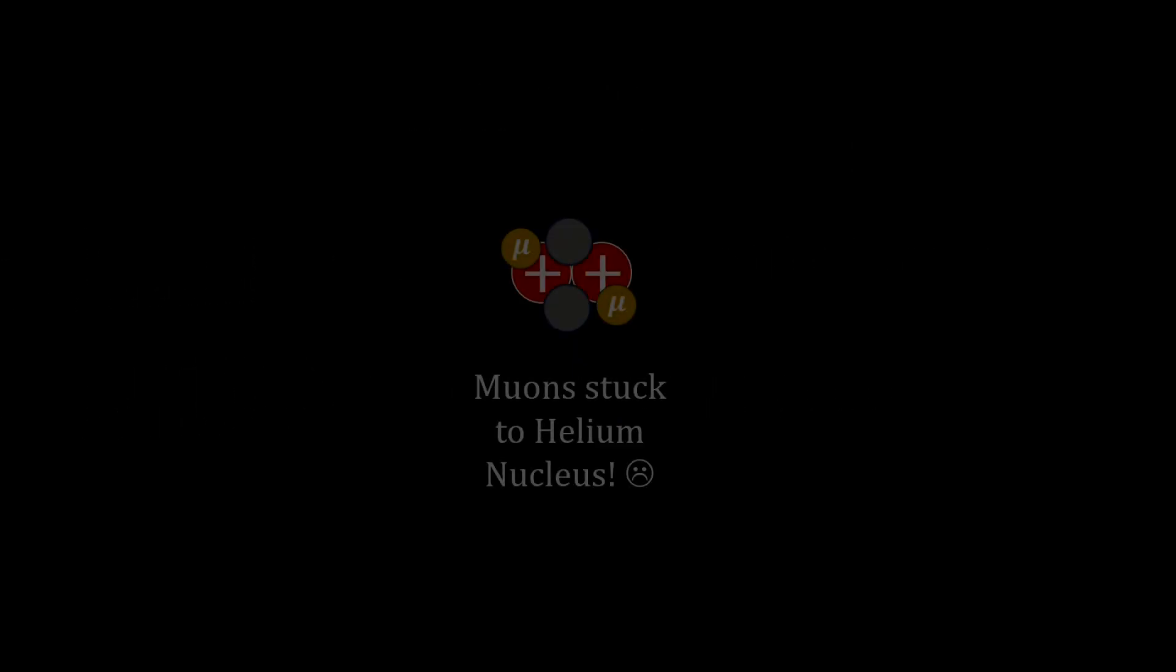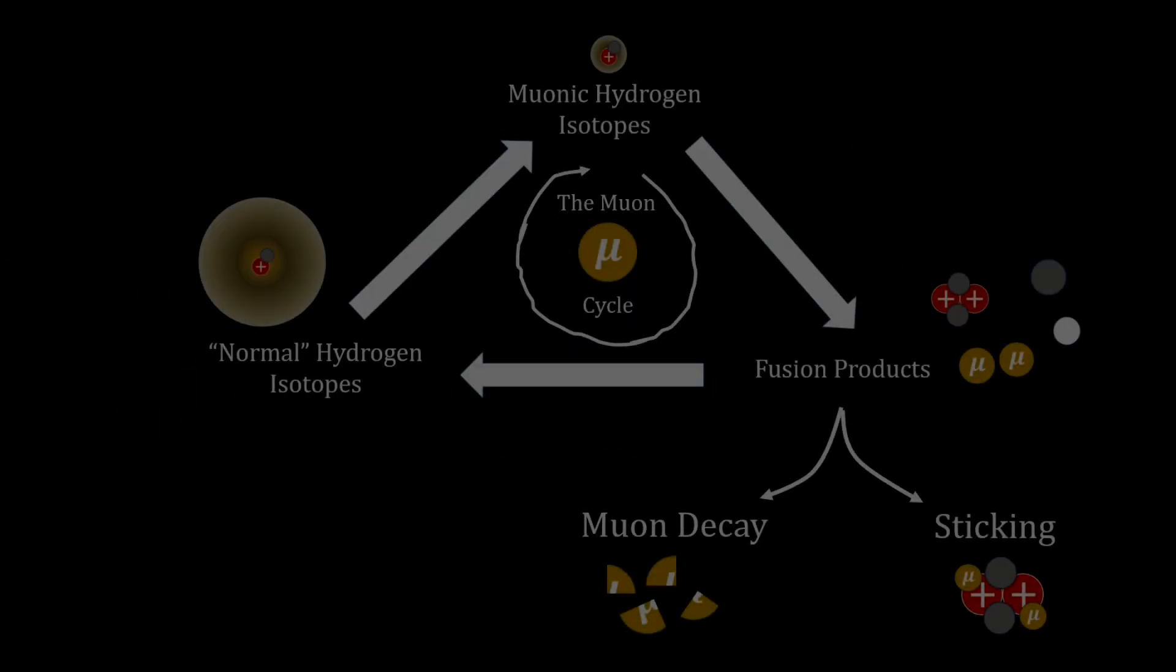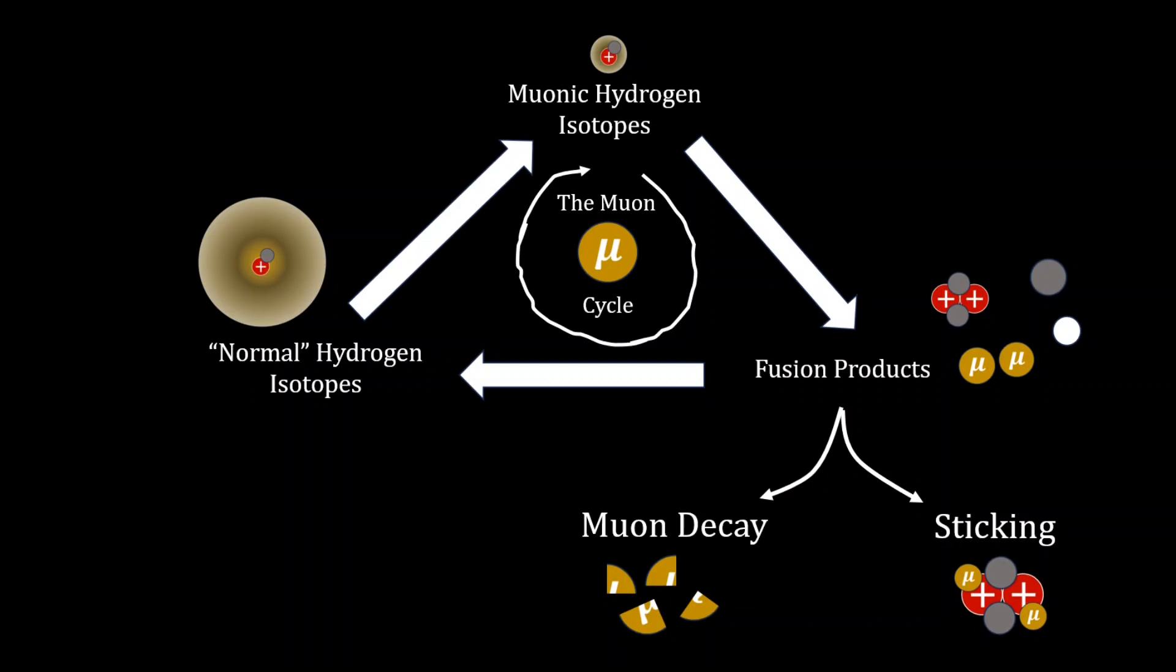Muons can also get stuck to the helium nucleus product, disabling the muon. This limits the amount of fusions a given muon can effectively catalyze to around 150 before it gets stuck or decays.